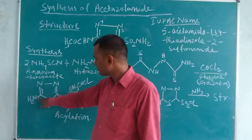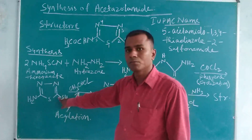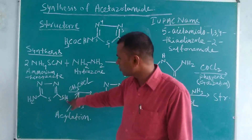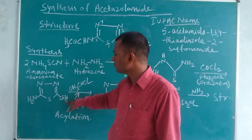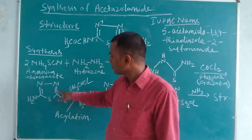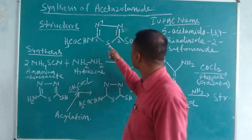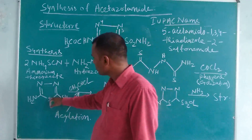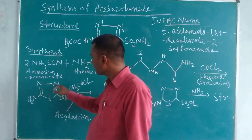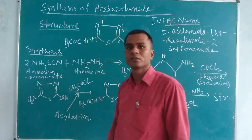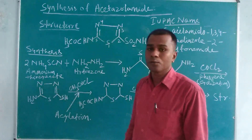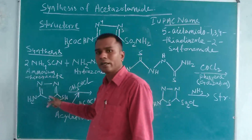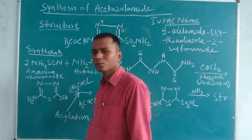This compound is 2-amino-5-mercapto-1,3,4-thiadiazole. The mercapto group is at position 5, and the amino group is at position 2. The ring is numbered 1 through 5, with the thiadiazole ring system (1,3,4-thiadiazole).